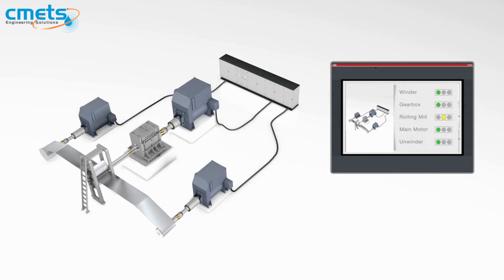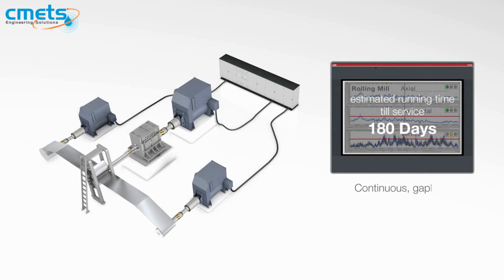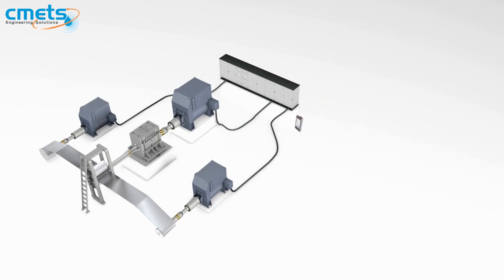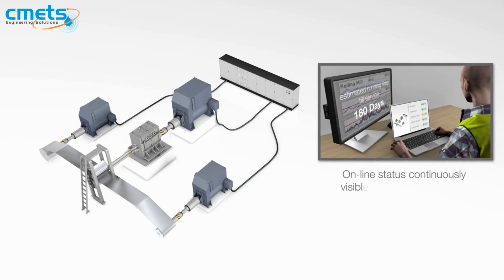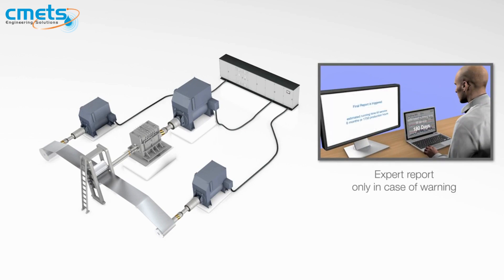An HMI can directly visualize the status to production personnel. When indicating a warning, detailed and more precise data can be shown immediately — locally or remotely, wherever an expert is available. Control integration enables the clearest fingerprints. Experts can remotely consult the operator and, where necessary, trigger additional measurements.